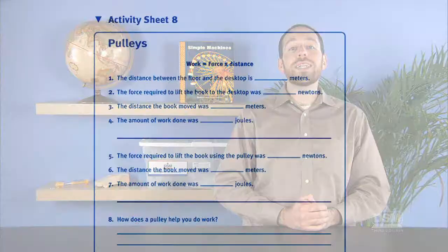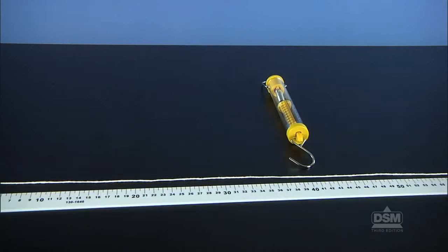Distribute a copy of Activity Sheet 8 to each student and a 60-centimeter piece of string, a spring scale, and a meter stick to each team of four.